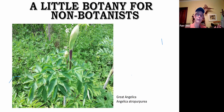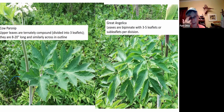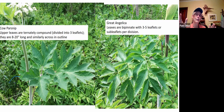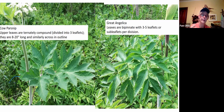Kim pointed out that if we line them up side by side, the cow parsnip has fewer leaflets — all quite large — and is divided into three leaflets. These middle leaves can be up to 20 inches long — they're big plants. On the right, great angelica has three to five leaflets, but it's bipinnate — compound upon compound — so it's a much more finely divided leaf than what you see on cow parsnip.